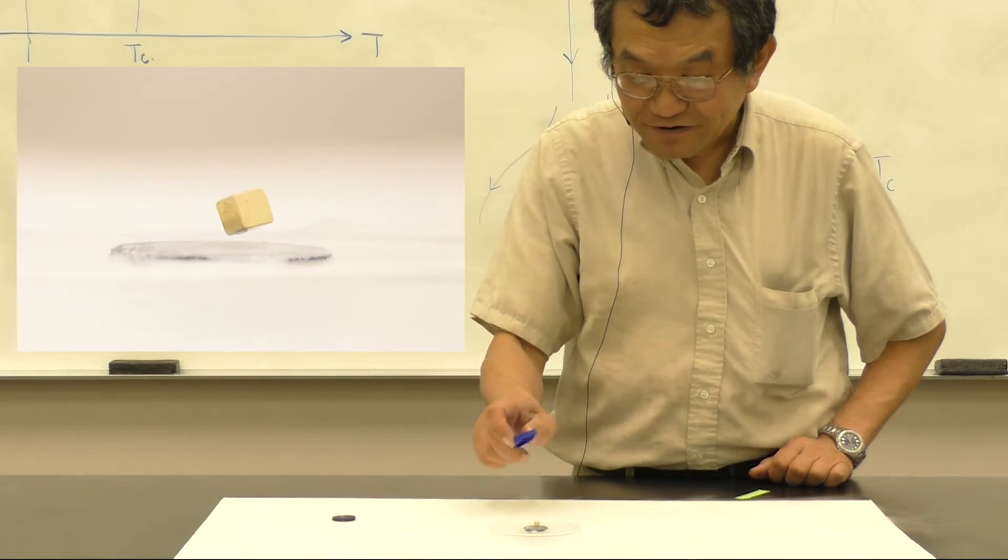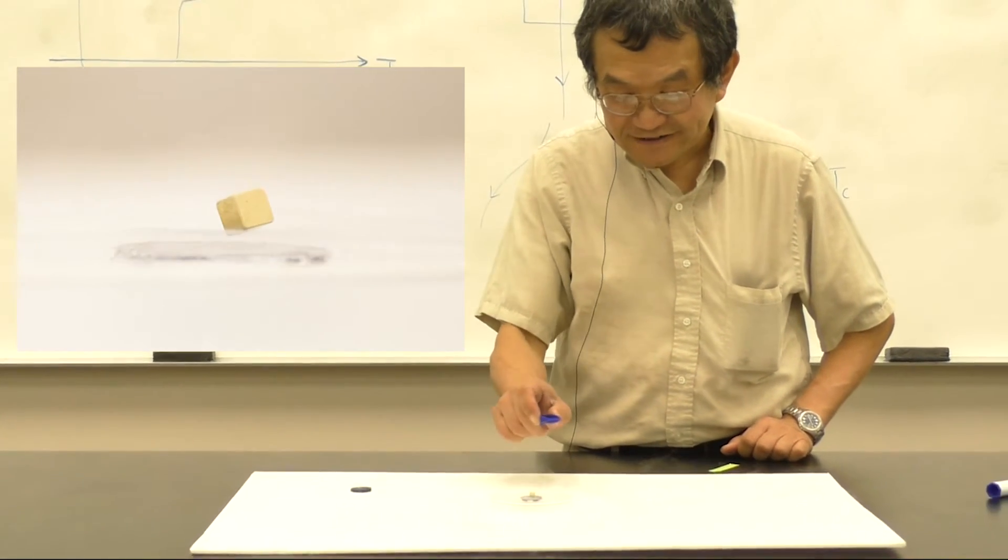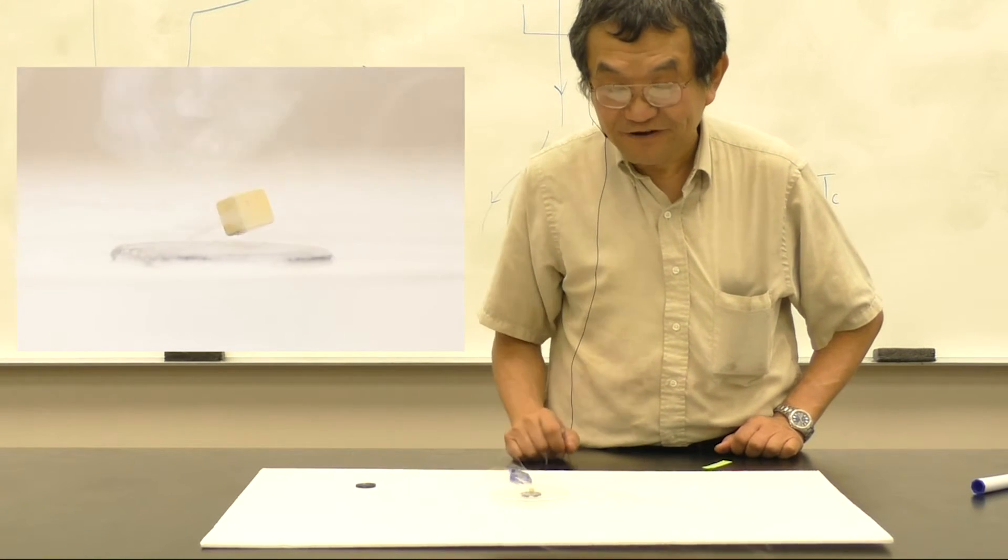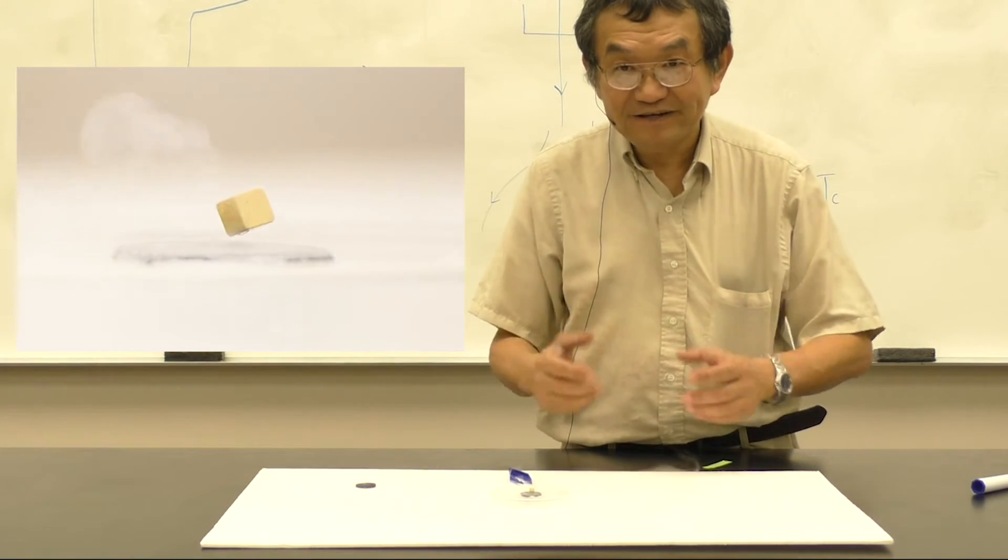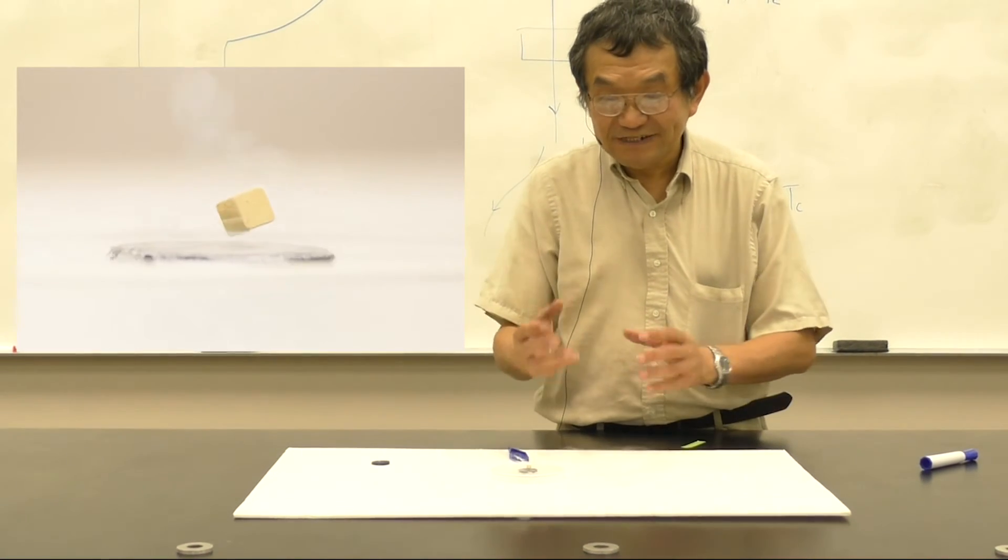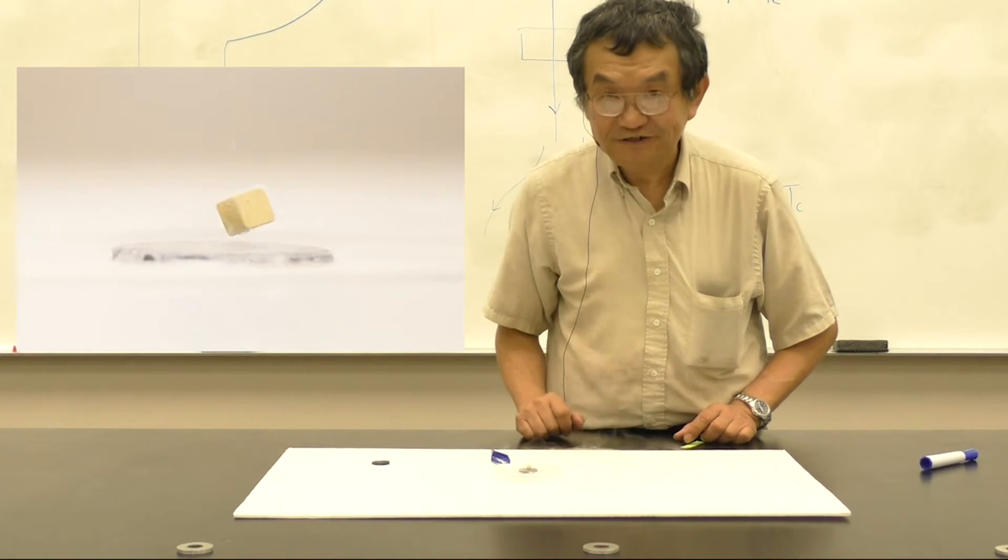The reason why it is stable and does not topple is because some of the field lines, a small amount of field lines, has actually gone through the superconductor. And this field line will be pinned down or trapped by the impurities and defects in the superconductor. And as a result, the magnet is being held steady on the top at this position.